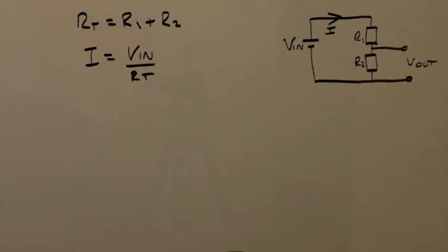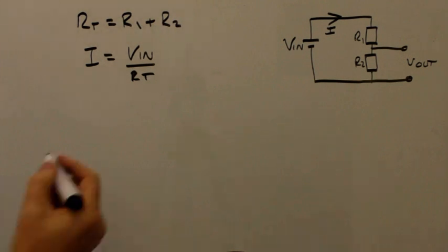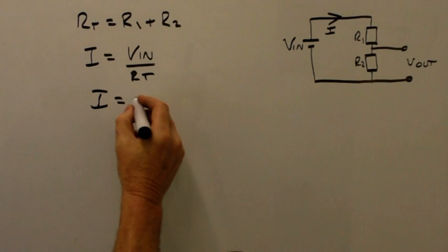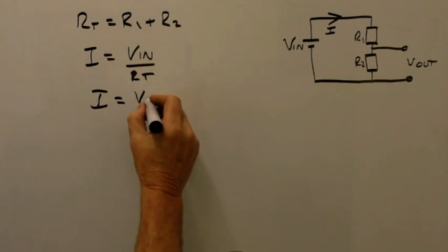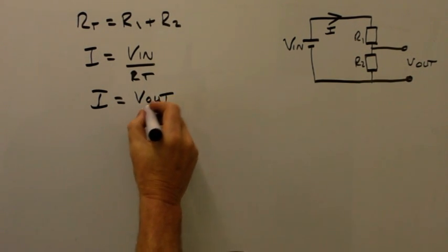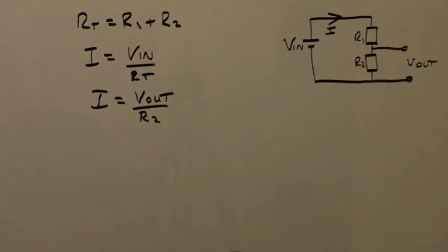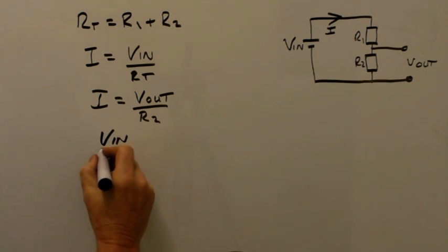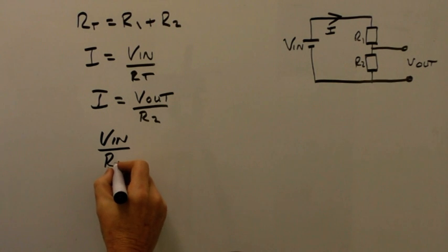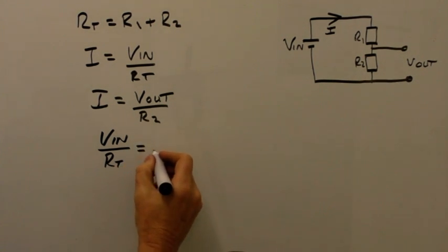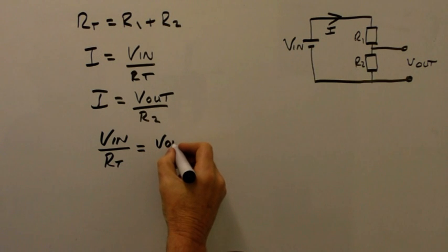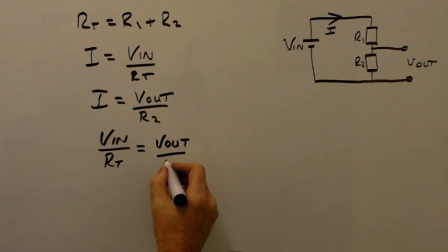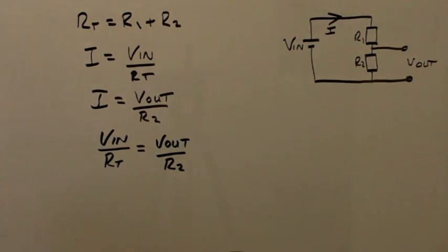We also know that the same current flows through the resistor R2. So we have I equals Vout over R2. From this, we can write V in divided by Rt is equal to Vout divided by R2.